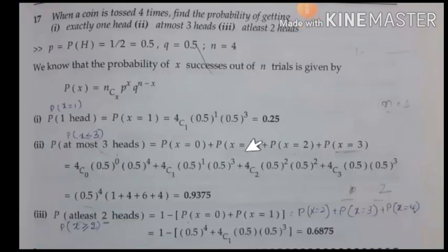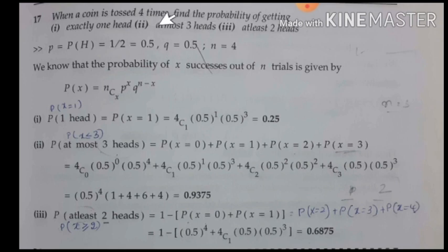We will continue with some problems related to binomial distribution. In the first example, when a coin is tossed four times, we need to find the probability of getting exactly one head, at most three heads, and at least two heads. These are the three conditions of probability we need to find out.